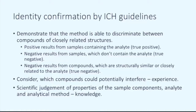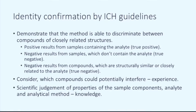Identity confirmation, as summarized by ICH guidelines, outlines the general requirements. It requires demonstration that the method is able to discriminate between compounds of closely related structures. Positive results must be obtained from samples which contain the analyte, and negative results from compounds which do not contain the analyte.